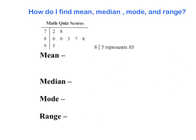So we're going to take a look at the stem and leaf plot and find the mean, the median, mode, and range. Let's review what a stem and leaf plot is. All the numbers to the left of the line represent the tens place, and all the numbers to the right represent the ones. The key shows that the number 8, the line, and then 5 represents 85. So to find the mean, we're going to add up all the numbers — this number here represents 72, not 2 or 7. So I'm going to add up all these numbers.